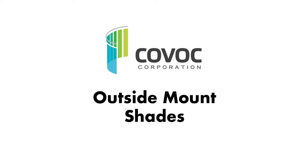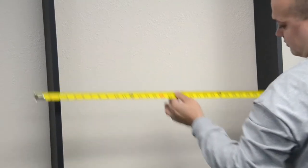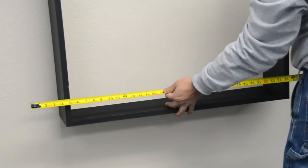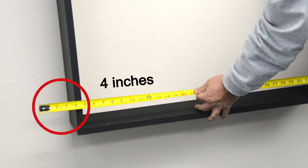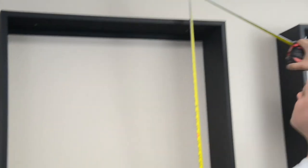For outside mount shades, measure the exact area that needs to be covered by the shade. We recommend covering 4 inches beyond the window on all sides of the window, including the top and bottom. Measure for both width and height.